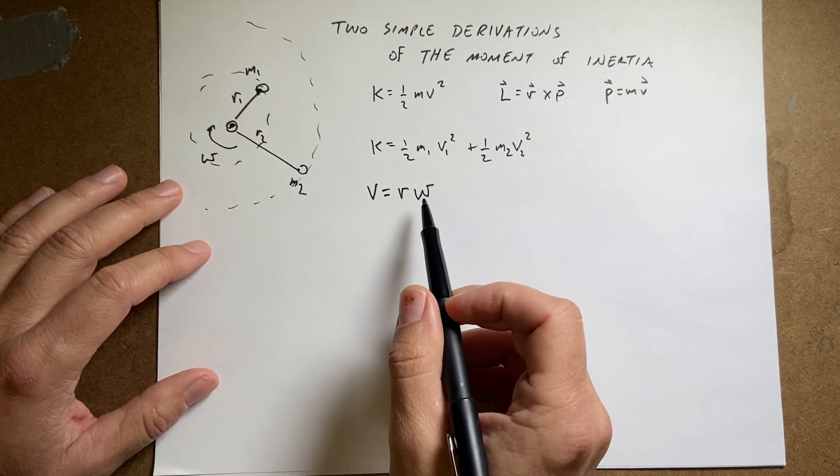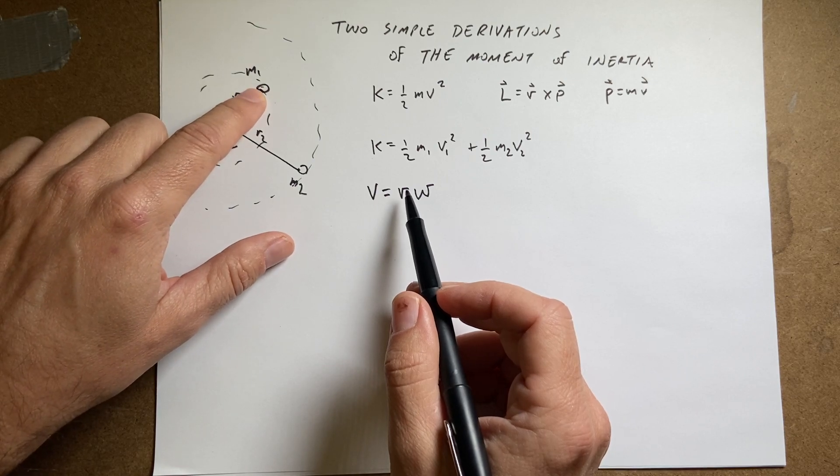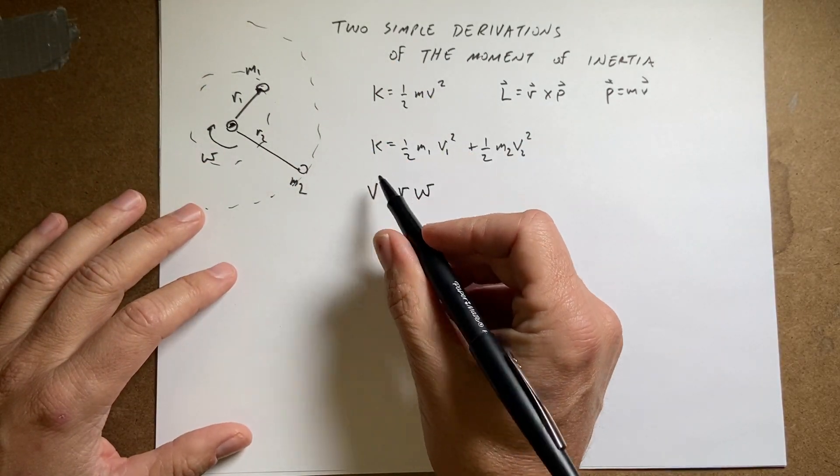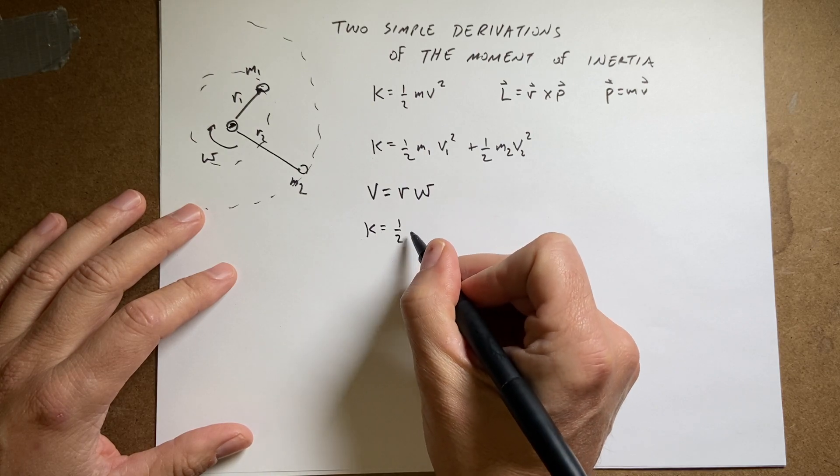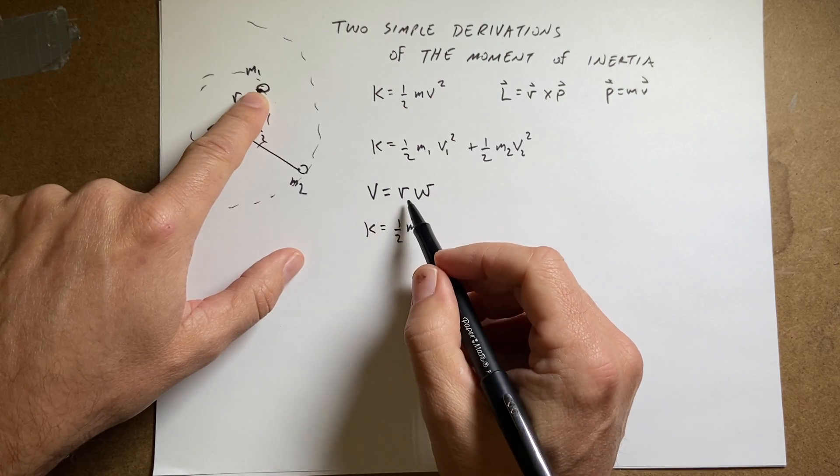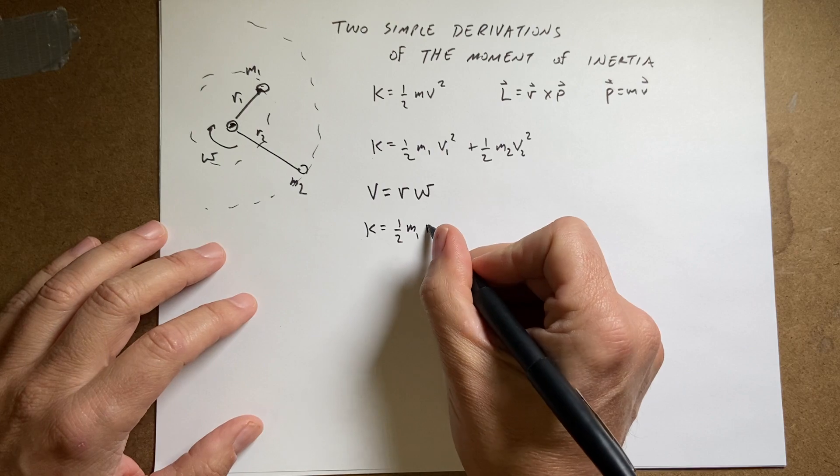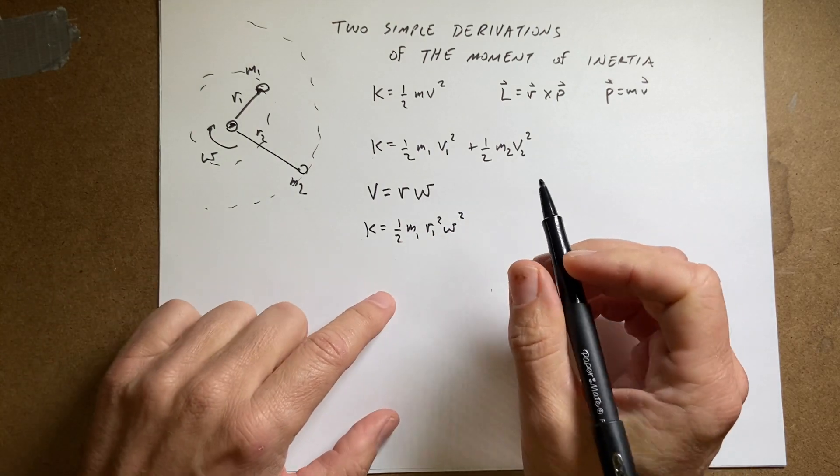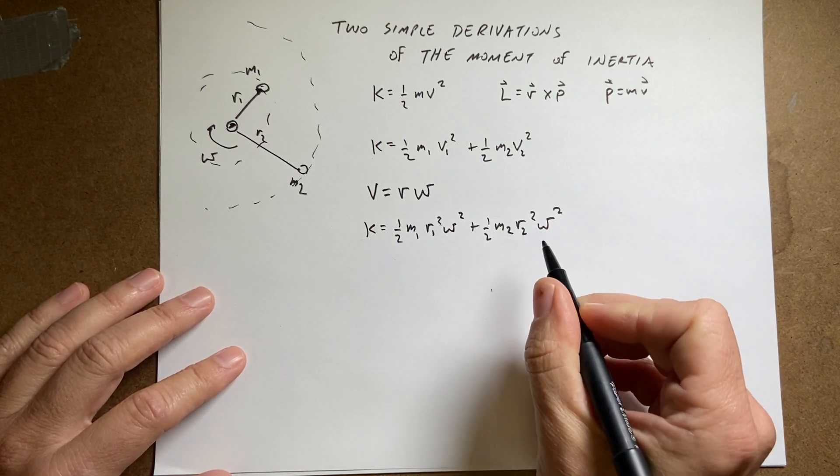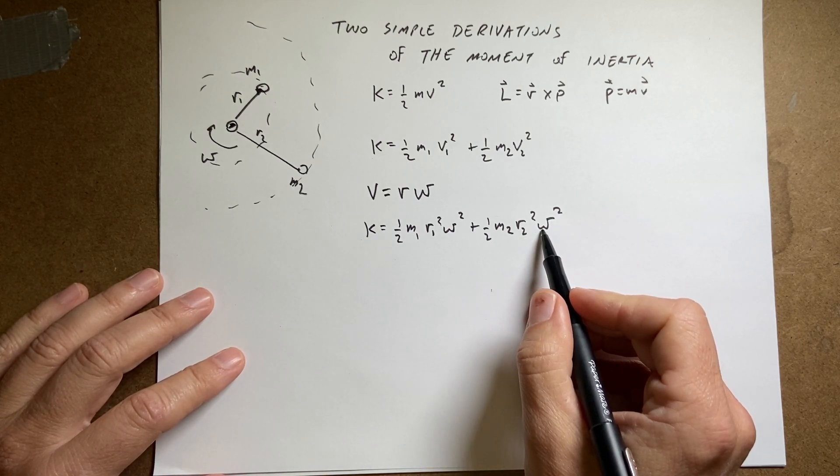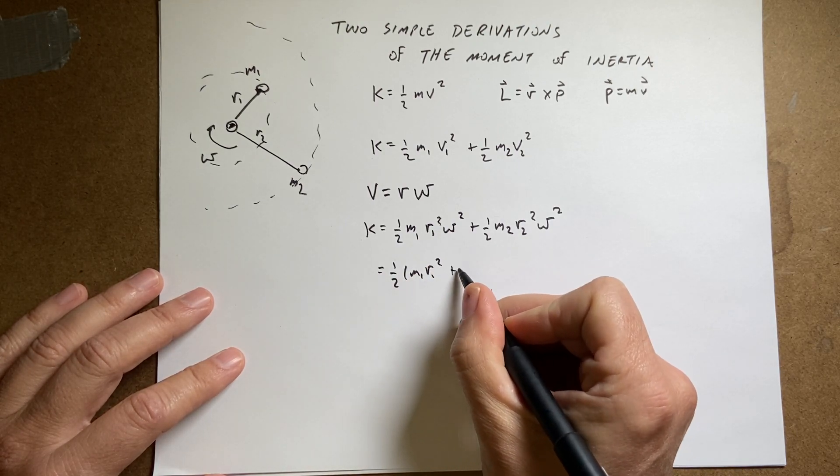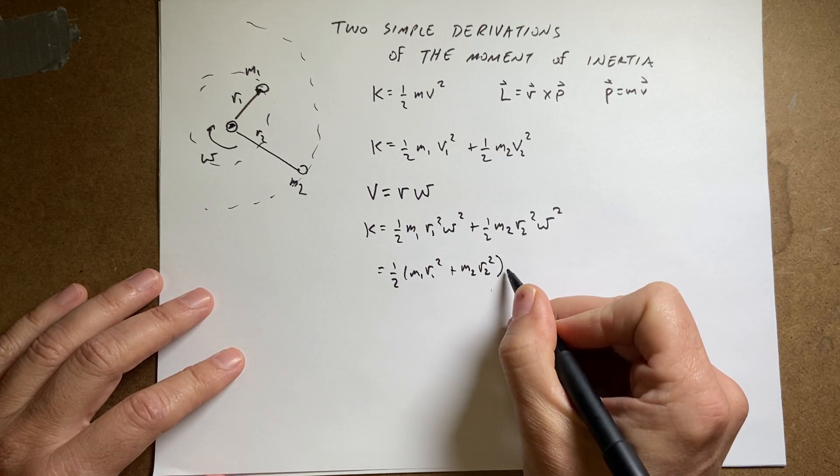So if I put that in up here, the one thing that's nice is that mass 1 has a velocity, mass 2 has a different velocity, but they have the same angular velocity because it's a rigid object. So if I rewrite kinetic energy, I can say this is equal to 1 half m1. Now for this v1 is going to be r1 omega. So this is going to be r1 squared omega squared. And then for mass 2, I have plus 1 half m2 r2 squared omega squared. And that's the same omega. So I can factor out the omega and the 1 half, and I get 1 half m1 r1 squared plus m2 r2 squared times omega squared.